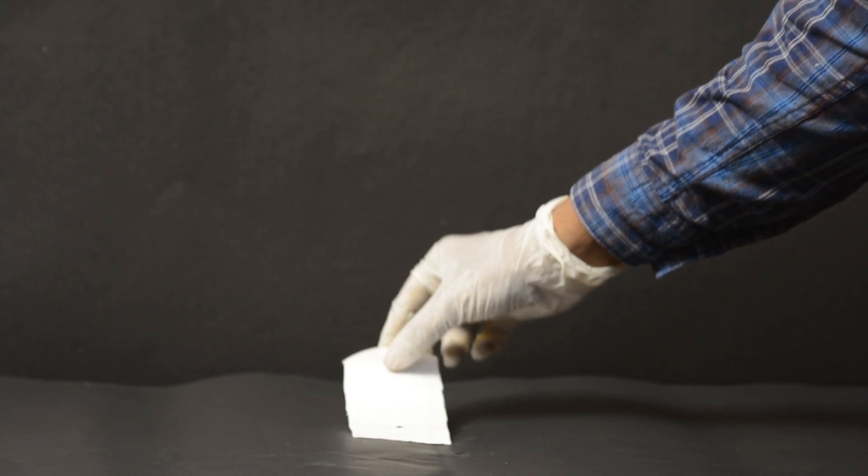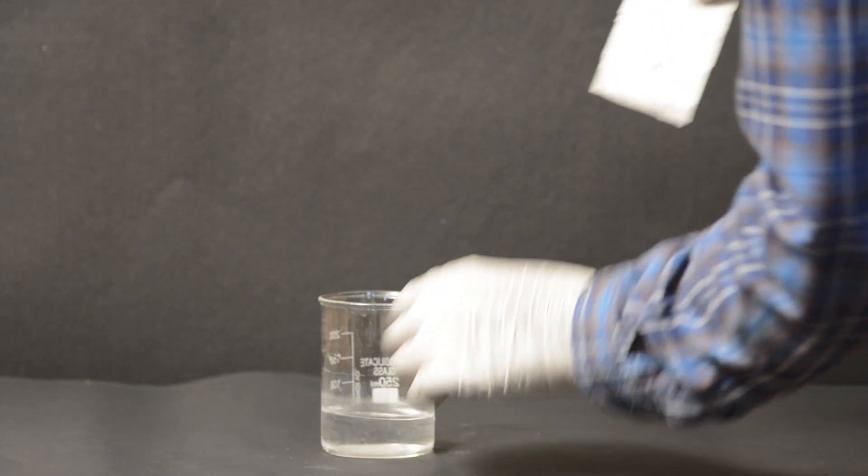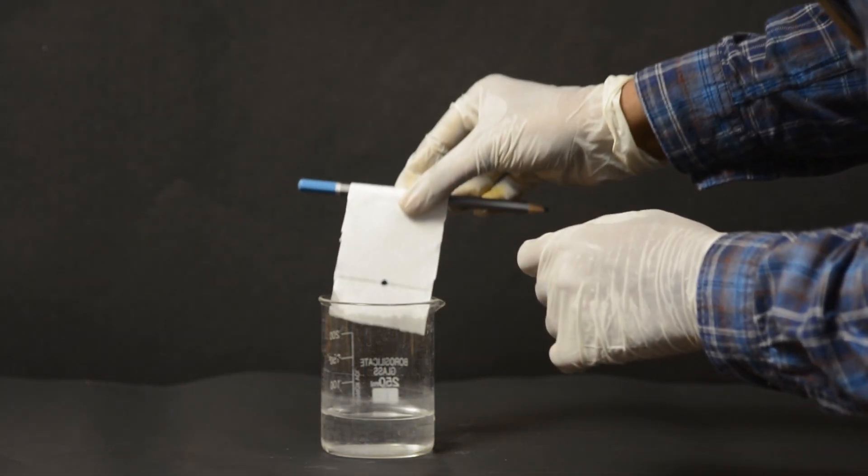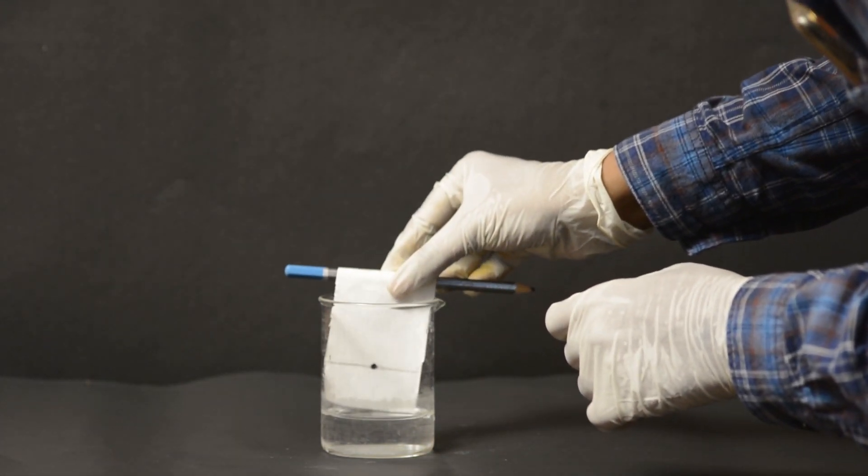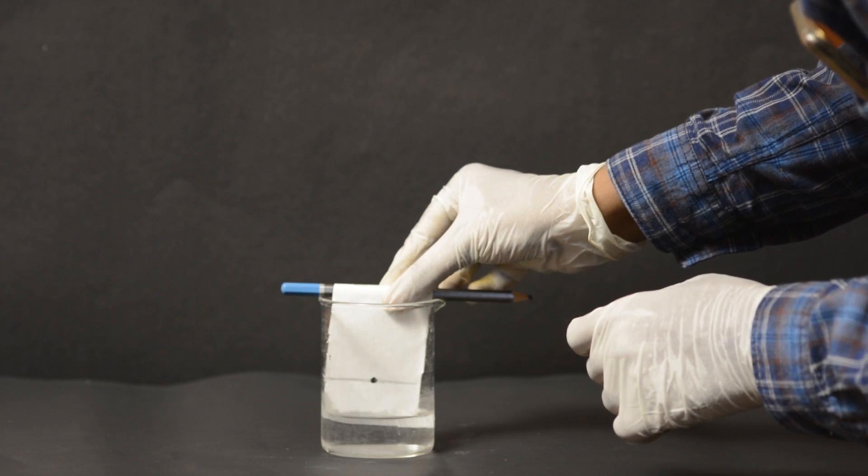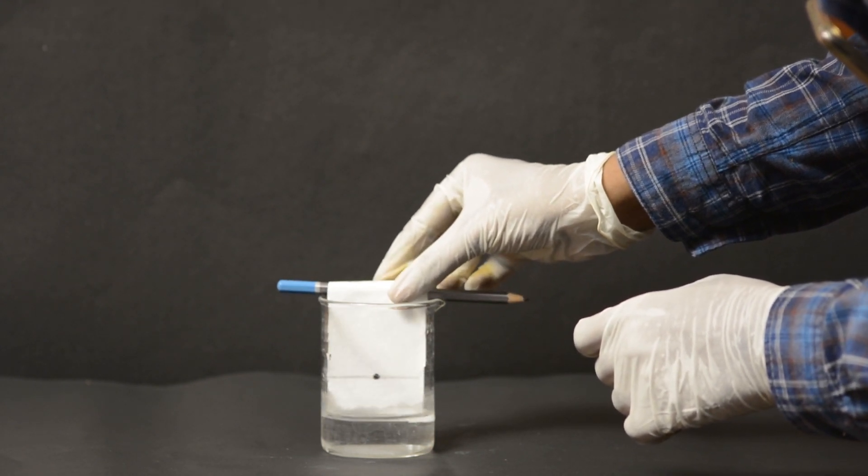Let it dry for some time, and now take a small quantity of water in a beaker. Lower the filter paper into the jar containing water with the help of a pencil.